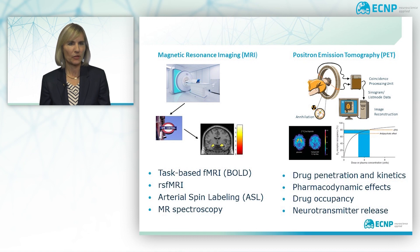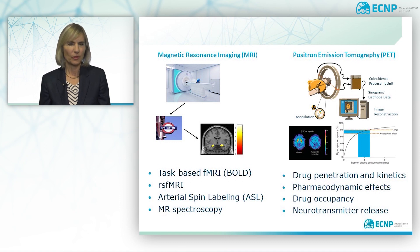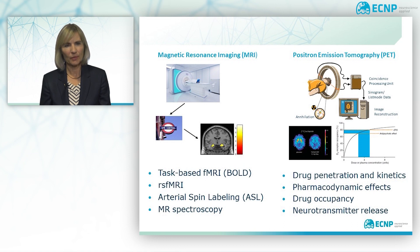Magnetic resonance spectroscopy is a technique that can measure the brain neurochemistry for selected molecules. Some of the most important are lactate and N-acetyl aspartate — a marker of neurons — the neurotransmitters GABA and glutamine, and creatine, which is a proxy for energy metabolism.